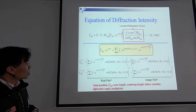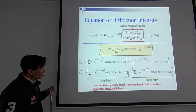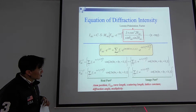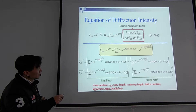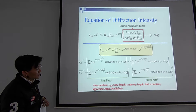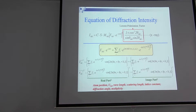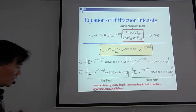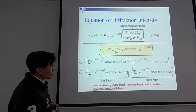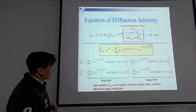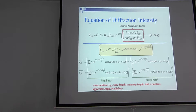So all the equations we need to calculate in the Excel file are listed here. We need to set up several things inside the Excel: atom position, U_ISO — which means the Debye-Waller factor — and we need to know the wavelength. The scattering length is correlated with atomic number. We also need the non-dilating constant, diffraction angle, and multiplicity.